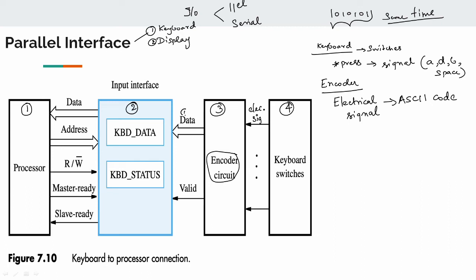For example, if I press A on the keyboard, it will have a binary representation — an 8-bit value. That is the data. Then what is the encoder circuit? The valid bit is set to 1 when data is present. Initially it is 0. When data arrives, valid bit becomes 1.